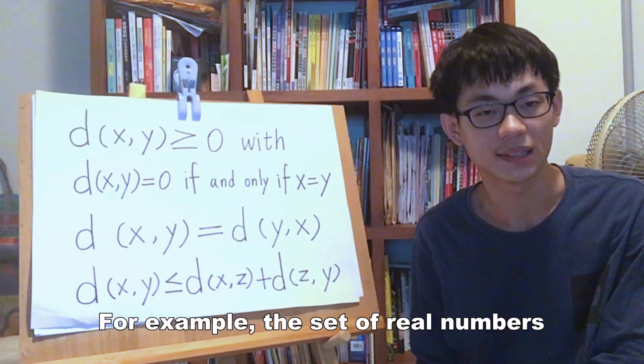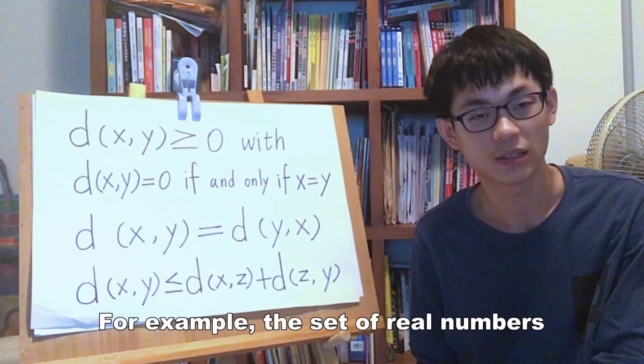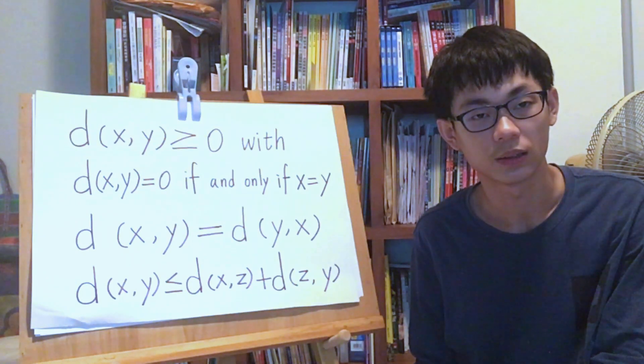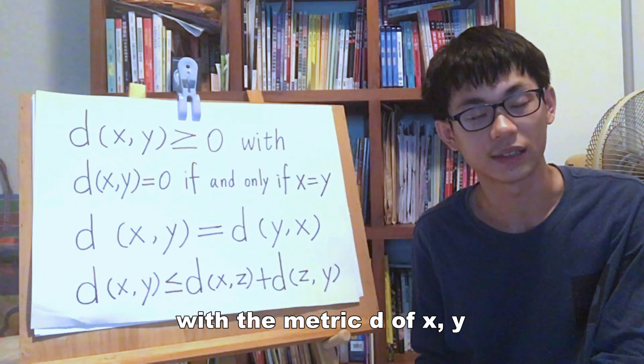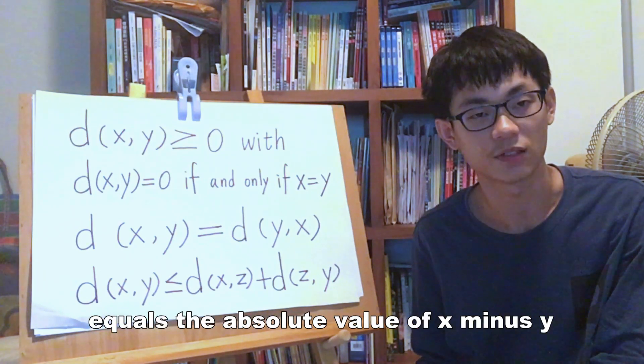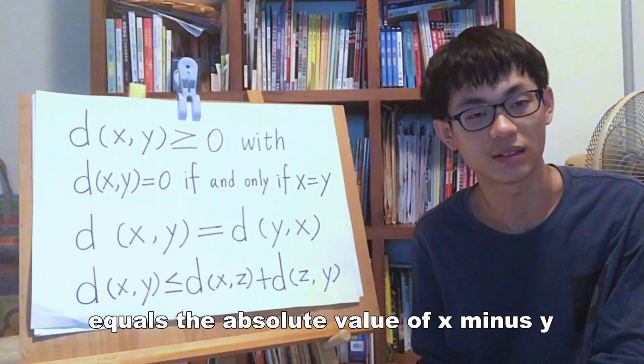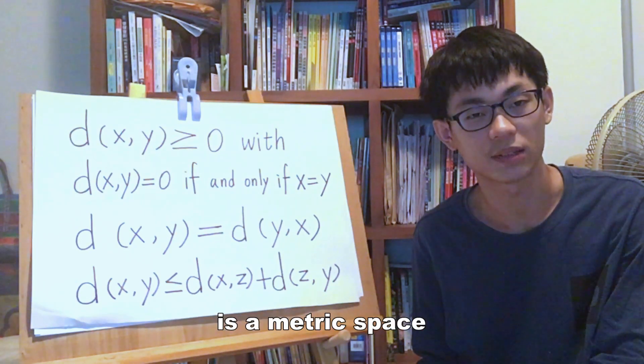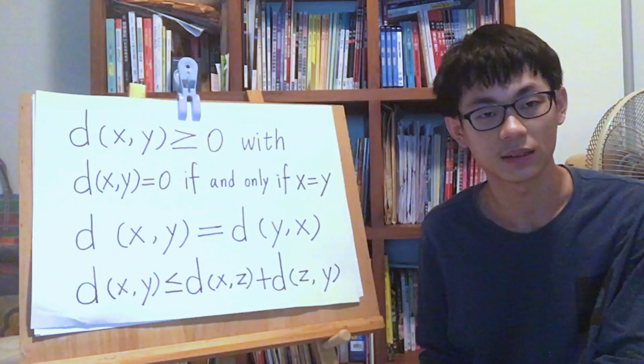For example, the set of real numbers with the metric d(x,y) equals the absolute value of x minus y is a metric space.